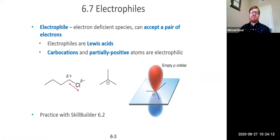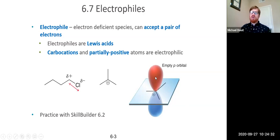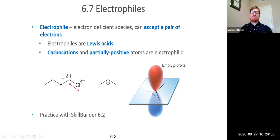Electrophiles are the opposite — anything that has an electron deficiency, such as a partial positive charge or a full positive charge. Carbocations, for example, have a positive formal charge, so they always act as electrophiles. These carbocations end up with an empty p orbital that can act as a Lewis acid and accept electron density from a nucleophile. So when identifying electrophiles, look for any atom with a partial positive charge or a positive formal charge.